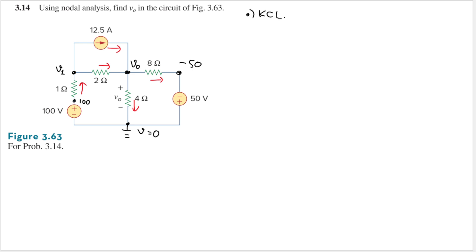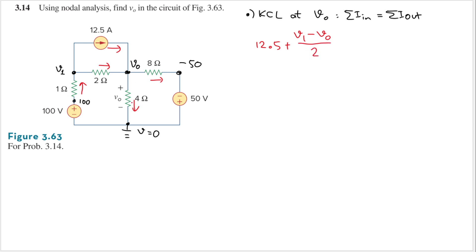Let's do KCL at v0. KCL says that the sum of the currents going in equals the sum of the currents going out. The currents going in are 12.5 and (v1 minus v0) divided by 2. The currents going out are v0 minus 0 divided by 4, and v0 minus (minus 50) divided by 8.